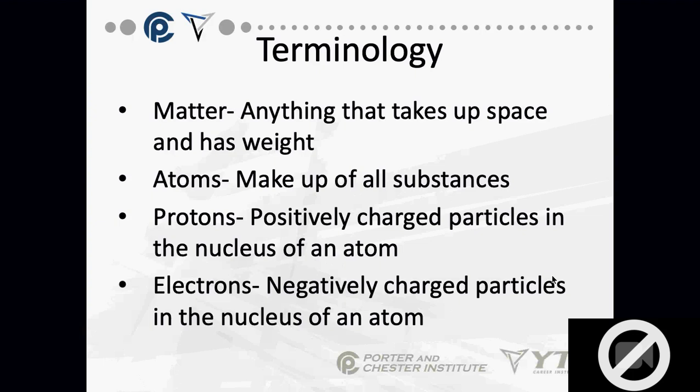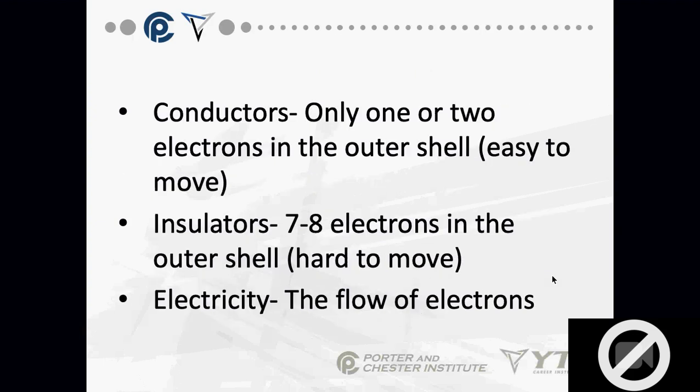Matter is anything that takes up space and has weight. Atoms make up all substances — we touched on this a bit when we started talking about electricity. Protons are positively charged particles in the nucleus of an atom. Electrons are negatively charged particles surrounding the nucleus. Conductors have only one or two electrons in the outer shell, making them easy to move. Conductors include copper, silver, and gold — gold is a better conductor but expensive.